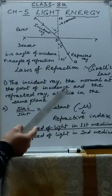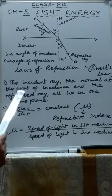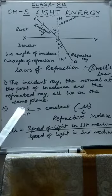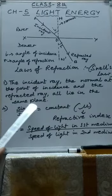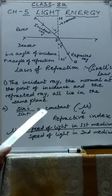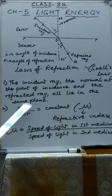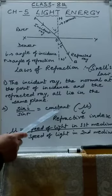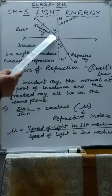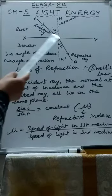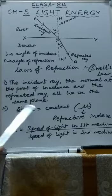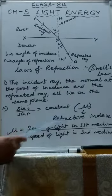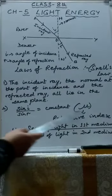The second law states that for a given pair of media and a given colour of light, the ratio of the sine of the angle of incidence I to the sine of the angle of refraction R is always a constant. That means for this pair of media, sin I / sin R will always remain constant. If we change I, the angle R will also change such that sin I / sin R always gives the same value. This constant is also called the refractive index, denoted by the symbol μ (mu).